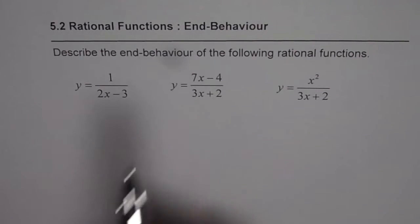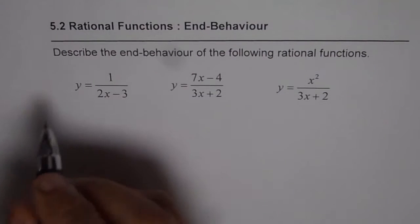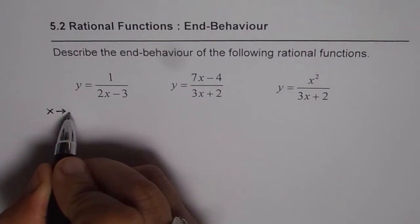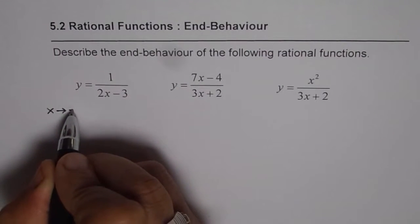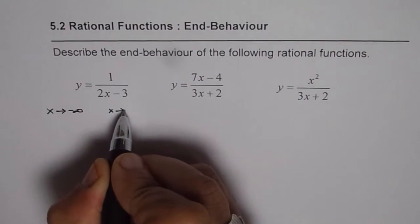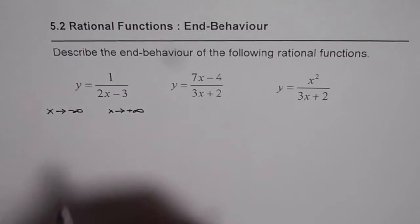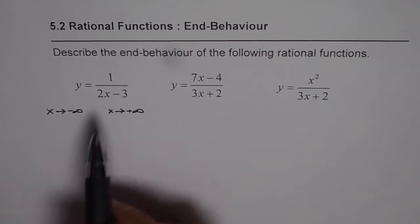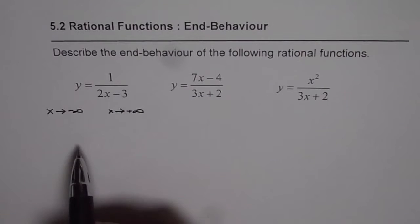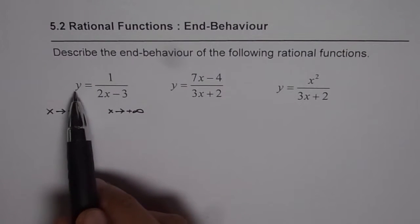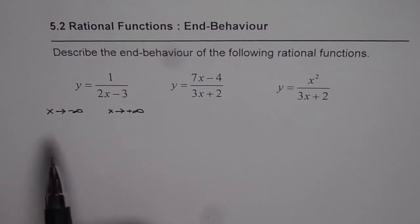Basically, end behavior of a function is that if the x value is very large — it could be a negative large value, which we say x approaches negative infinity, or it could be a positive large value, x approaches positive infinity — then how does the graph of the function behave? That is end behavior, or what happens to the y value of the given function.